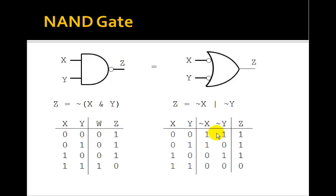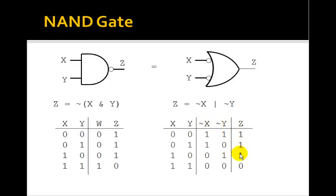Let's figure out the truth table. Here X and Y go 0,0 / 0,1 / 1,0 / 1,1. If we compute NOT X, the values 0,0,1,1 become 1,1,0,0. If we compute NOT Y, the values 0,1,0,1 become 1,0,1,0. Z is just the OR of NOT X and NOT Y — it's 1 if either input or both are 1, and 0 otherwise. But this Z is the same as the NAND gate Z, so this symbol really is a NAND gate.